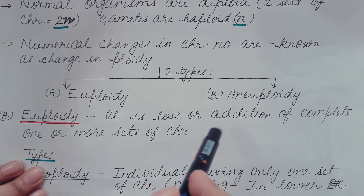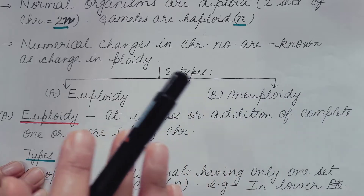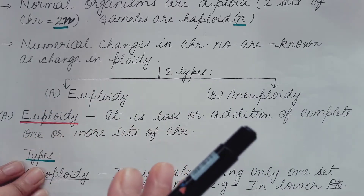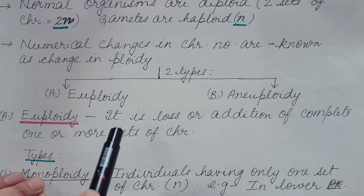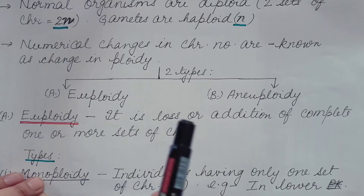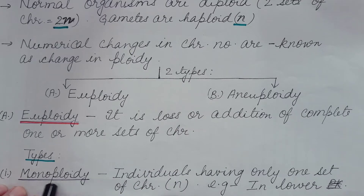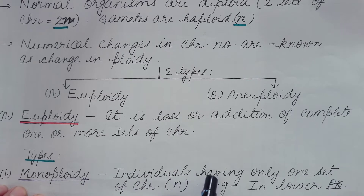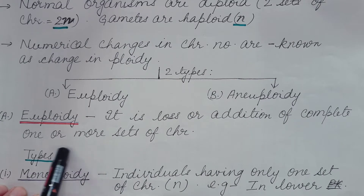In euploidy, the change involves the entire set of chromosomes. It is of two types. First, monoploidy: when an individual has only one set of chromosomes represented as n, it is known as monoploidy, also known as haploid. It is seen in lower eukaryotes and all prokaryotes.